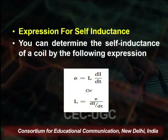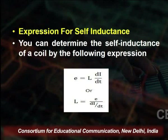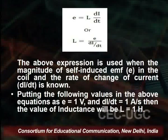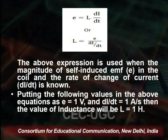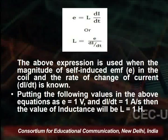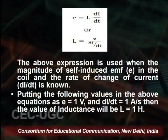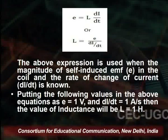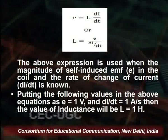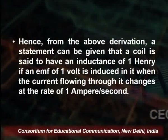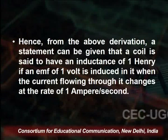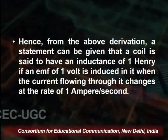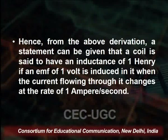We can determine the self-inductance of the coil by the expression: E equals L di/dt, so L equals E divided by di/dt. E represents the EMF in the coil and di/dt is the rate of change of current. By putting E equal to 1 volt and di/dt equal to 1 ampere per second, the value of inductance L will be 1 Henry. The unit of self-inductance is Henry.